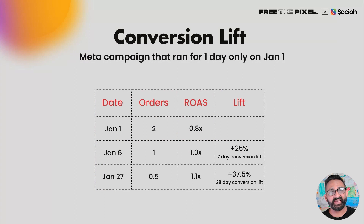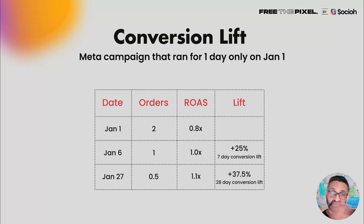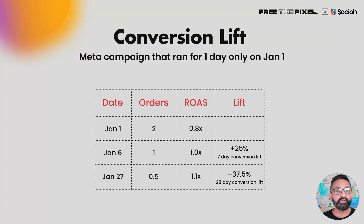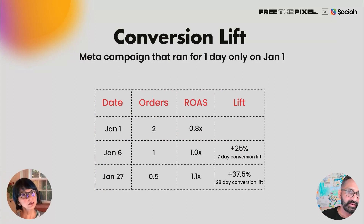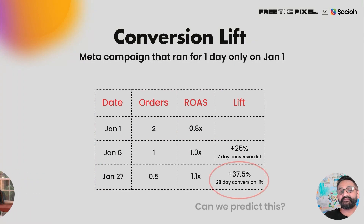Let's take a quick example. Maybe I ran this ad campaign only for one day on the first of January and I got two sales. Then on the sixth or seventh I got another transaction from the same impression and now my revenue is up 25 percent. And maybe on the 27th I got attributed another half a sale and now my revenue is up 37.5 percent from what I saw on January 2nd.